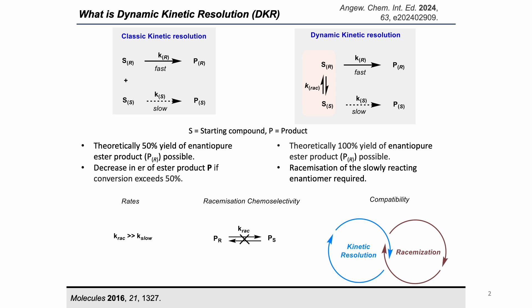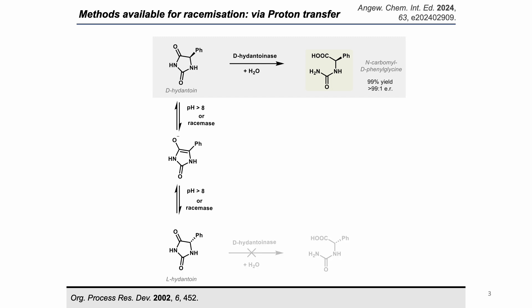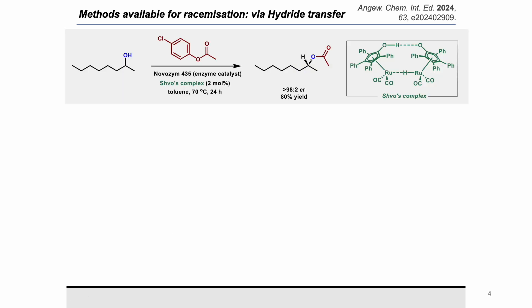The key to understanding DKR lies in the racemization, which I will discuss in the following slides. Among the methods available for racemization, one is proton transfer. A classic example is the racemization of hydantoins in the presence of base via enolate formation. This methodology is currently in use in industry and is well developed.